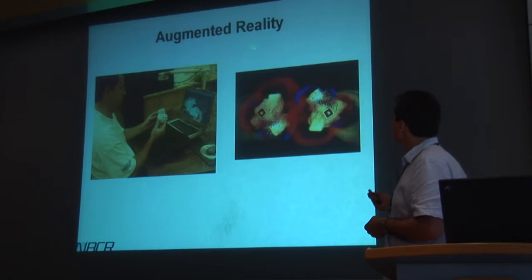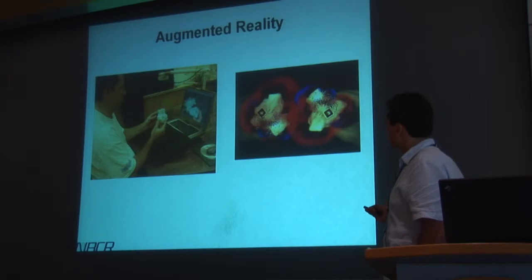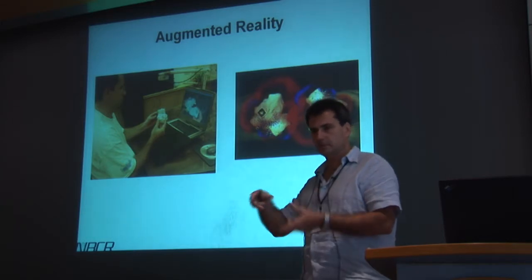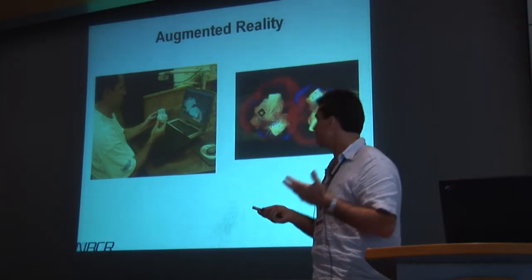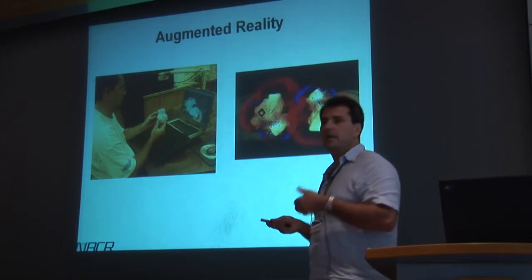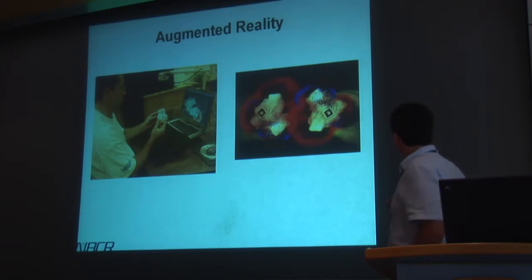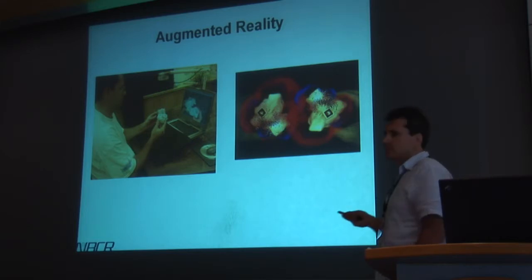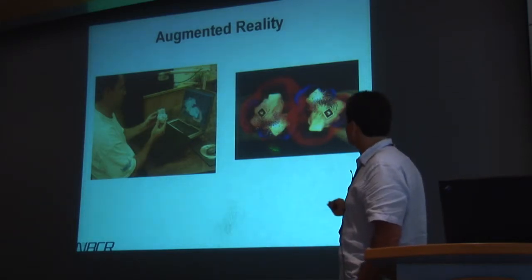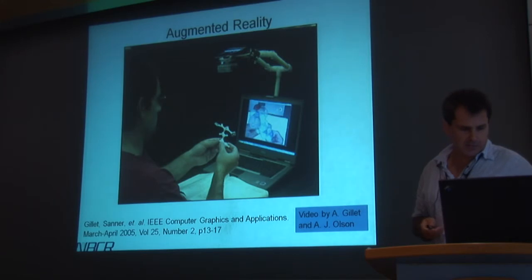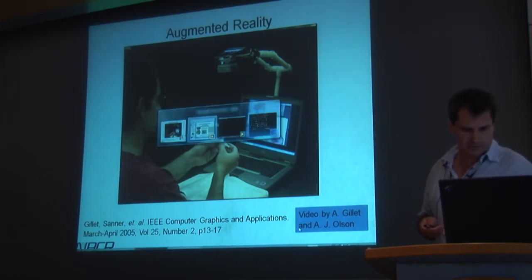We started looking into augmented reality, where the idea is that you take a camera and point it at the physical object you're manipulating. On the screen you see the video feed, but we put fiducials on the model that allow us to track the object in the scene. We can then compute some properties and display additional information on the screen. For instance, here someone is holding two models of superoxide dismutase, and the computer superimposes the volume rendering of the electrostatic field around the molecule.